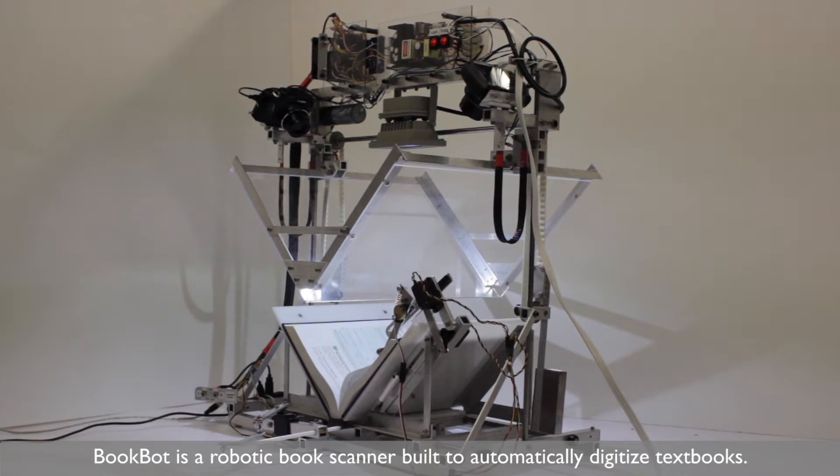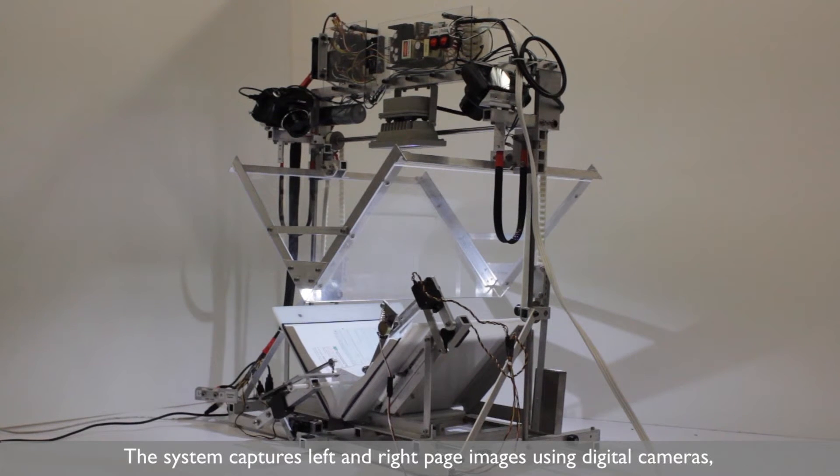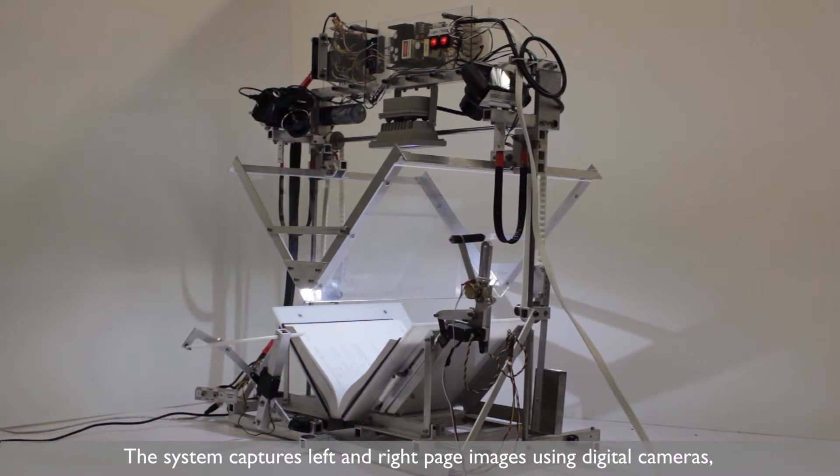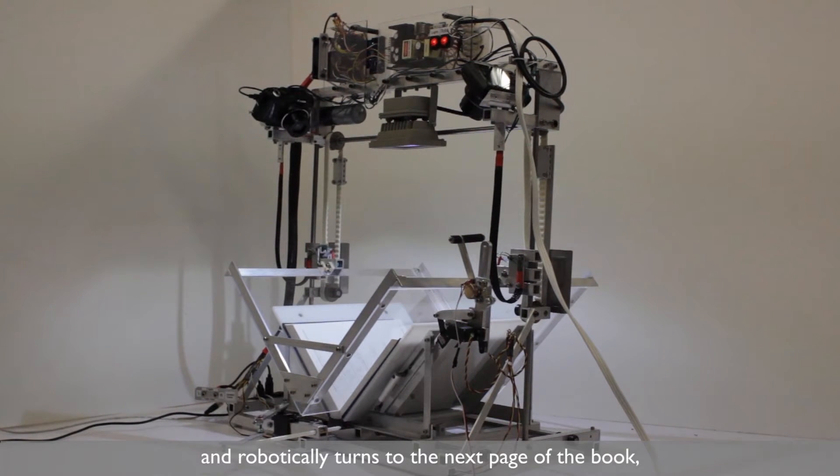BookBot is a robotic book scanner built to automatically digitize textbooks. The system captures left and right page images using digital cameras and robotically turns to the next page of the book.